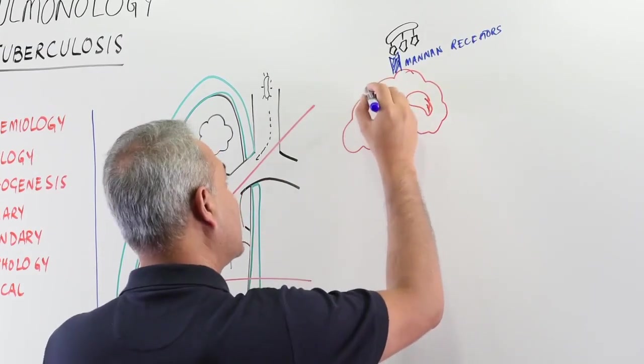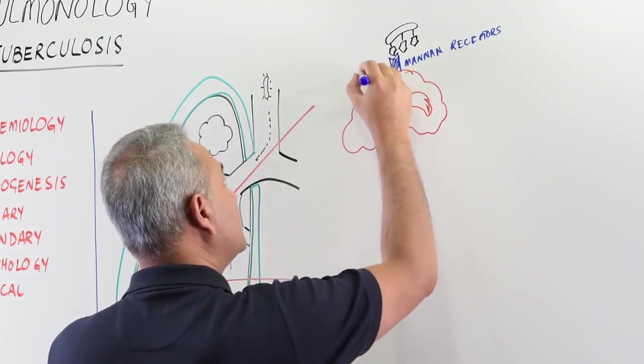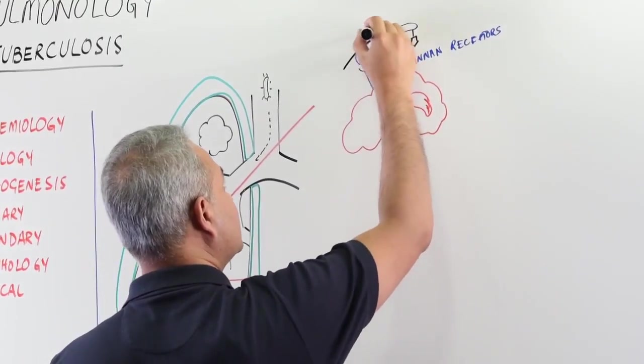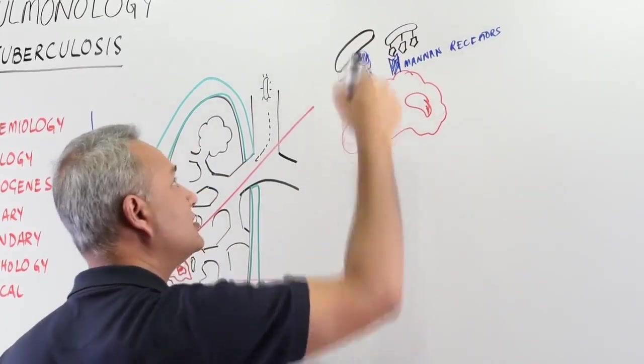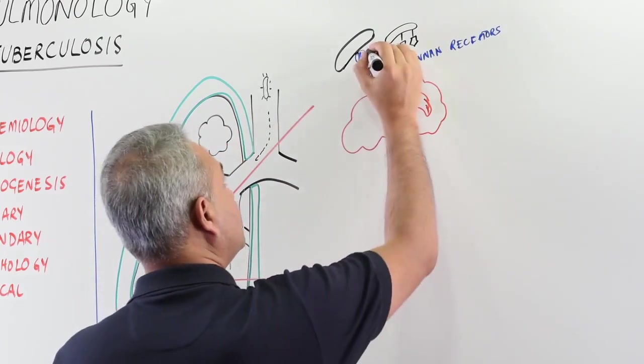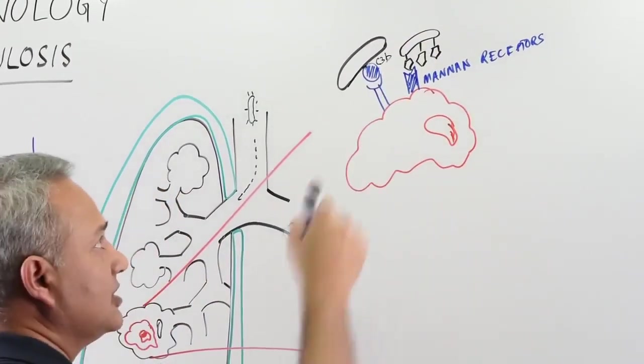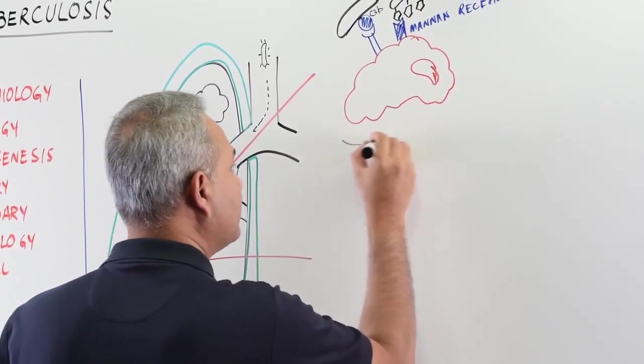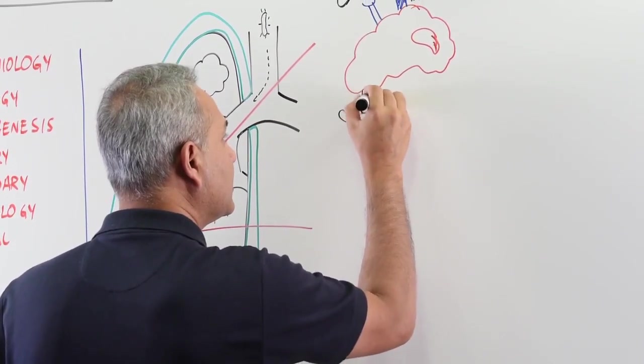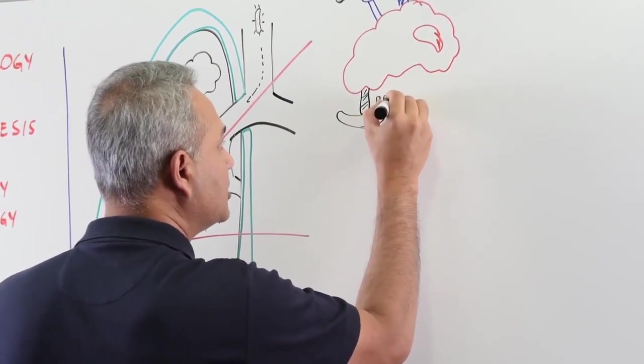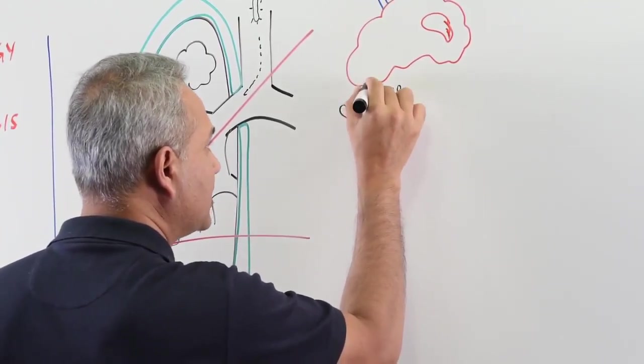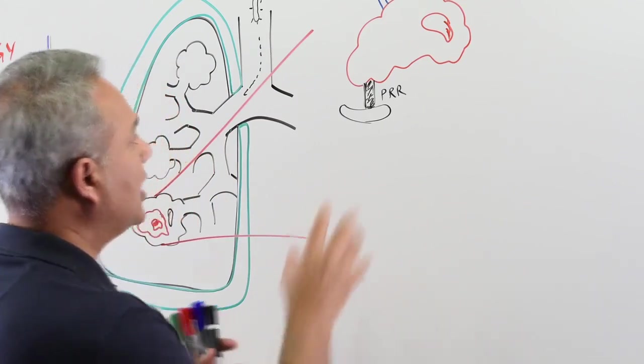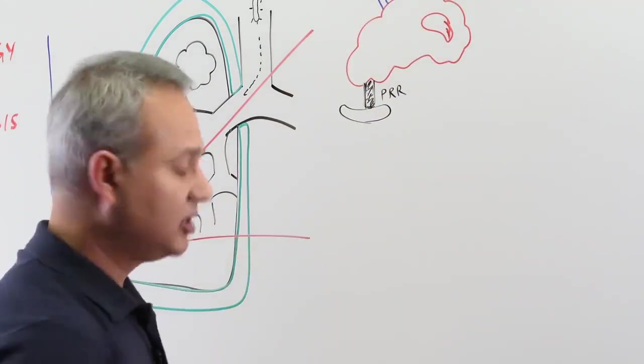Second mechanism is that the macrophage has complement binding receptors as well. Let's say this is another pathogen here. On the pathogen surface, C3B complement protein has become attached, and so macrophage is now connected with the pathogen through the C3B. Then we also know that the macrophage can connect to the pathogen through the pathogen recognition receptors. These receptors are special proteins that can find various antigenic patterns on the surface of the pathogen and bind with them. Now various pathogens are stuck with the macrophage.